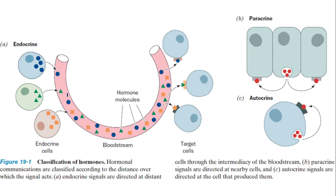What about the paracrine system? A paracrine cell produces a chemical messenger that binds to the receptor of a nearby cell — not the same cell that produced it. This is what is called the paracrine system, or paracrine signaling.